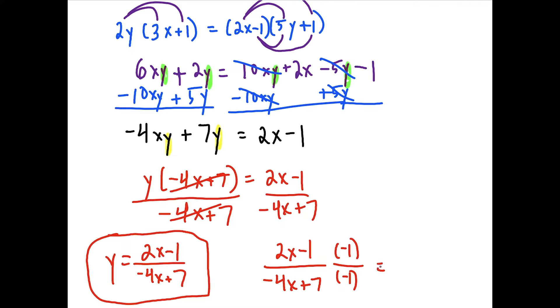So to see what it would be, if I multiply the top and bottom of our answer by negative 1, I'm still going to get an equivalent fraction here. But now I'll have a negative 2x and a positive 1 over a positive 4x and a minus 7. So just know that this answer here is also equivalent to this answer. All right, we could also say 1 minus 2x over 4x minus 7. So any sort of rearrangement here is okay.